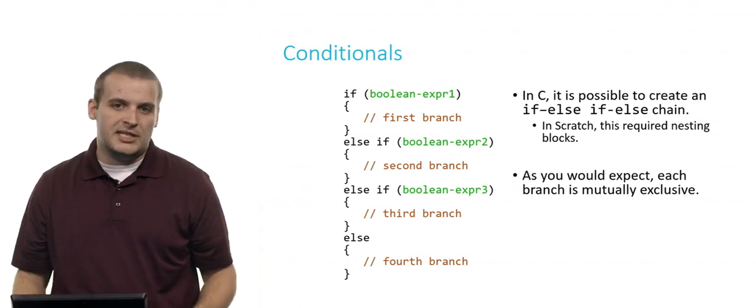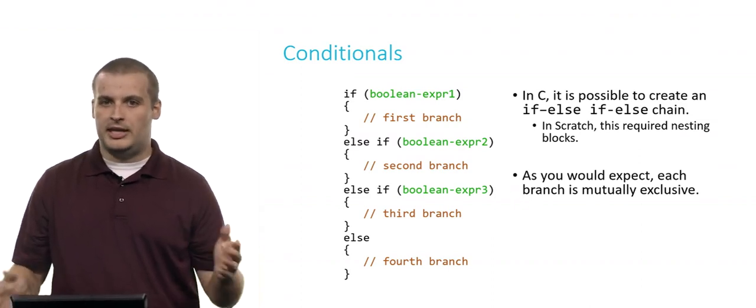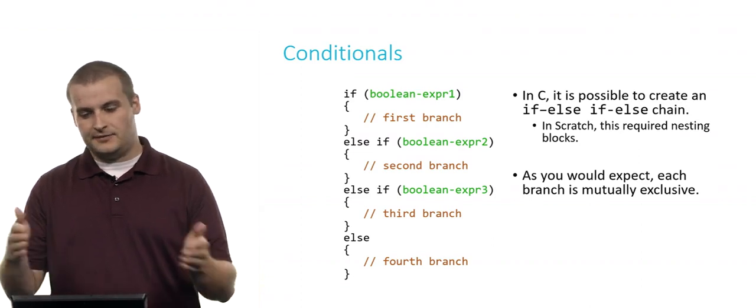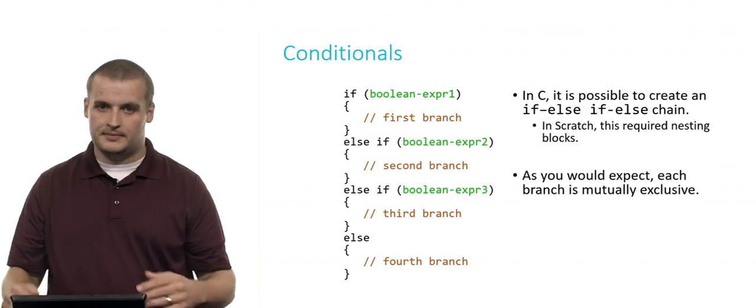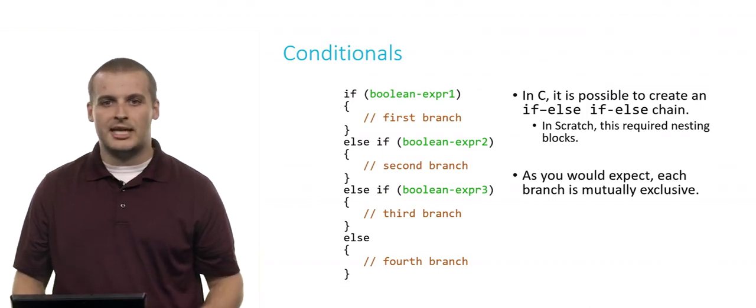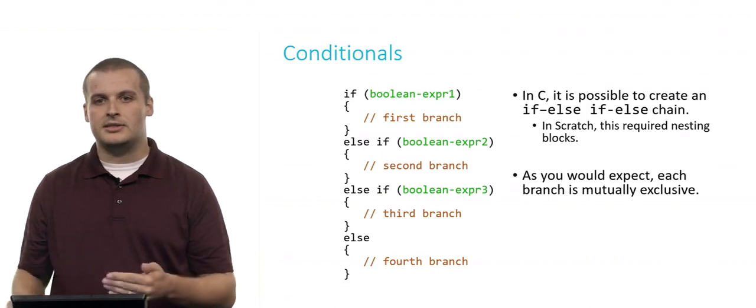Again, as you might expect, all of these branches are mutually exclusive. You can only ever go down one of the branches. If this is true, otherwise if this is true, otherwise if this is true, otherwise do this. So all four of the branches in this example are mutually exclusive. It's an if, else if, else chain.